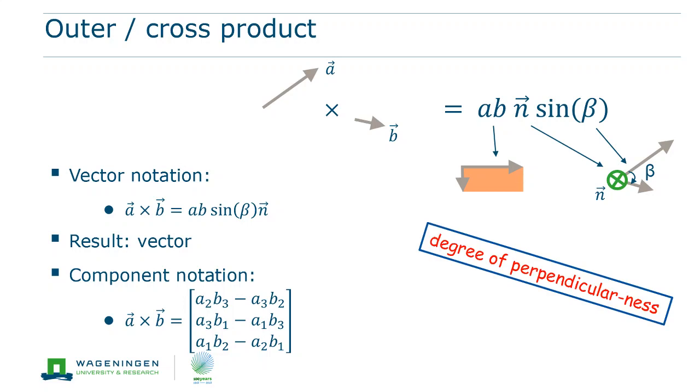the outer product is a measure of how similar two vectors are, both in length and in the degree to which they are perpendicular. So a larger outer product indicates that two vectors have a larger difference in size and are more perpendicular.